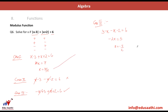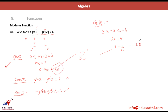We have two candidate solutions: x = 7/2 = 3.5 and x = −5/2 = −2.5. Checking x = 3.5: both expressions inside the modulus come out positive, confirming the assumption. Checking x = −2.5: both expressions are consistent with the negative assumption. So the two solutions are x = 3.5 and x = −2.5, both satisfying the given equation.